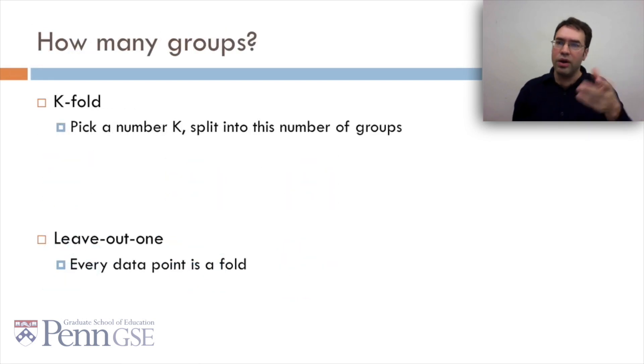How many groups do you want? We talked about this briefly earlier in the class. You could do k-fold, where you pick a number k, and you split into this number of groups. Like the case before was six-fold. Or you could do leave-out one, where every data point is its own fold, and you repeatedly train on every data point except for one, and then test on that one.